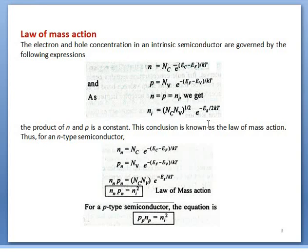The minus sign is kept, giving minus Eg upon 2KT, since Ec minus Ev equals Eg. The product is expressed as Nc·Nv·exp(−Eg/KT). On the left side we have N·P; when replaced by Ni, we have Ni squared. Removing the square gives the square root of Nc·Nv, and the exponential term is divided by 2, giving the concentration of electrons and holes in terms of the forbidden energy gap.